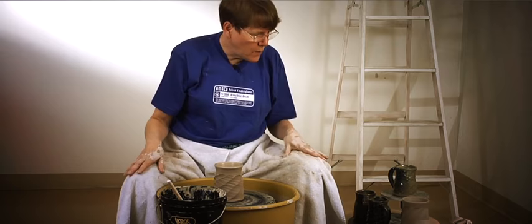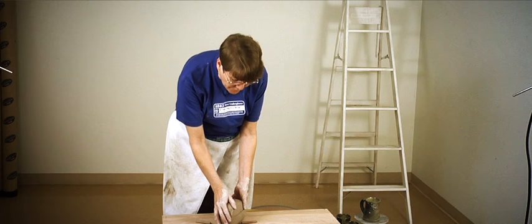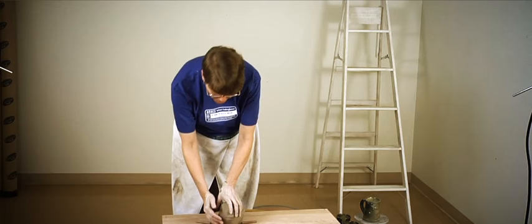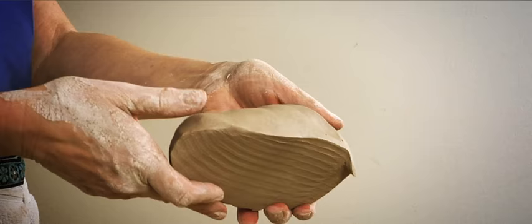And meanwhile, I'm going to show you how I put a handle on. So in my home studio I have a pug mill and I usually take a pug of clay and flatten it and then cut it on a diagonal. And what I'm aiming for is something like this, which is sort of the equivalent of a half of a pug of clay.